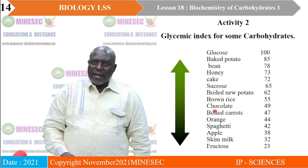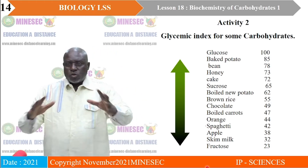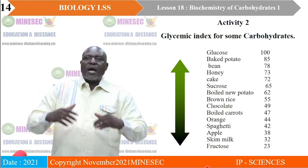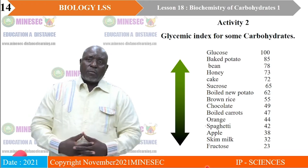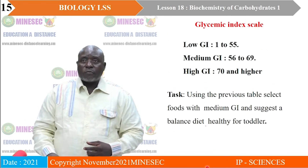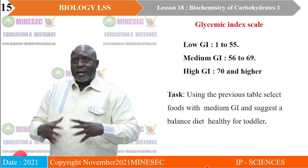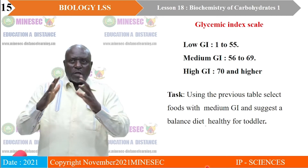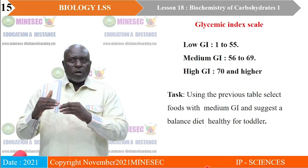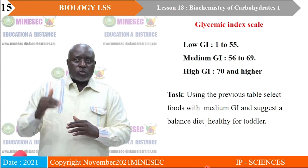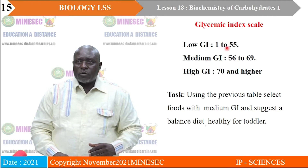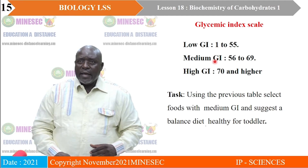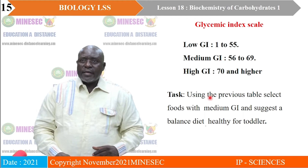A glycemic scale helps you know the range of a glycemic index that falls under low, medium, and high. When the glycemic index ranges from 1 to 55, it has a low glycemic index. Any food at 70 and above has a high glycemic index. Foods in between these two zones have a medium glycemic index.